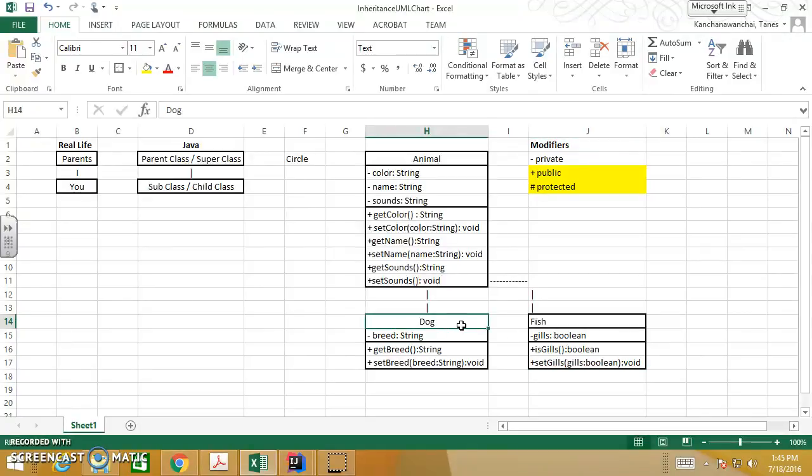When you instantiate an object dog, you normally do like this, right? Dog Snoopy equals new Dog. So the object is Snoopy. Snoopy is a dog. If you do it in this form, Snoopy is a dog, always a dog.